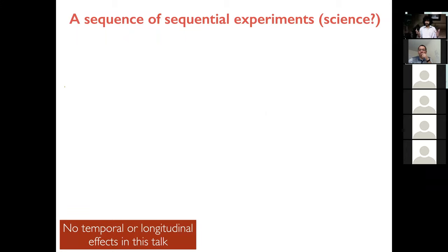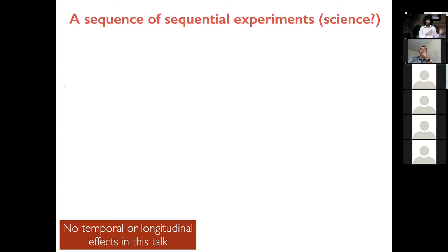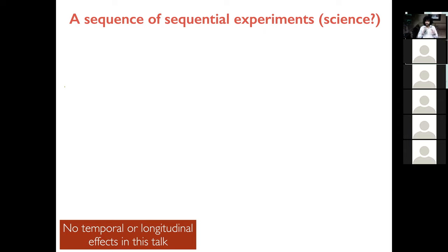This talk is about what I call doubly sequential experimentation — a sequence of sequential experiments. I want to clarify: there will be the word 'sequential' or 'online' appearing everywhere, but I'm not going to talk about temporal or longitudinal effects. All of the issues I will raise arise in the IID setting itself — even with independent hypotheses and independent data, the issues already arise, just like usual multiple testing.